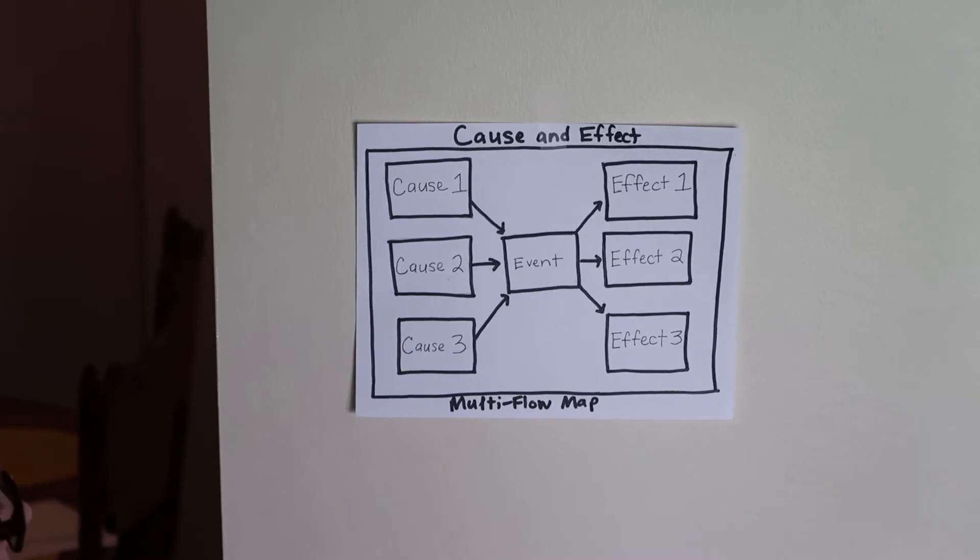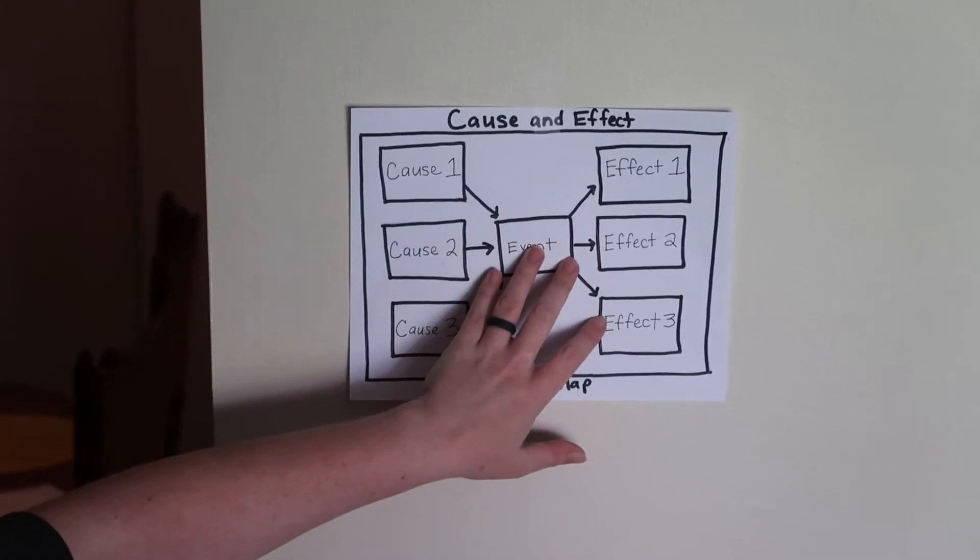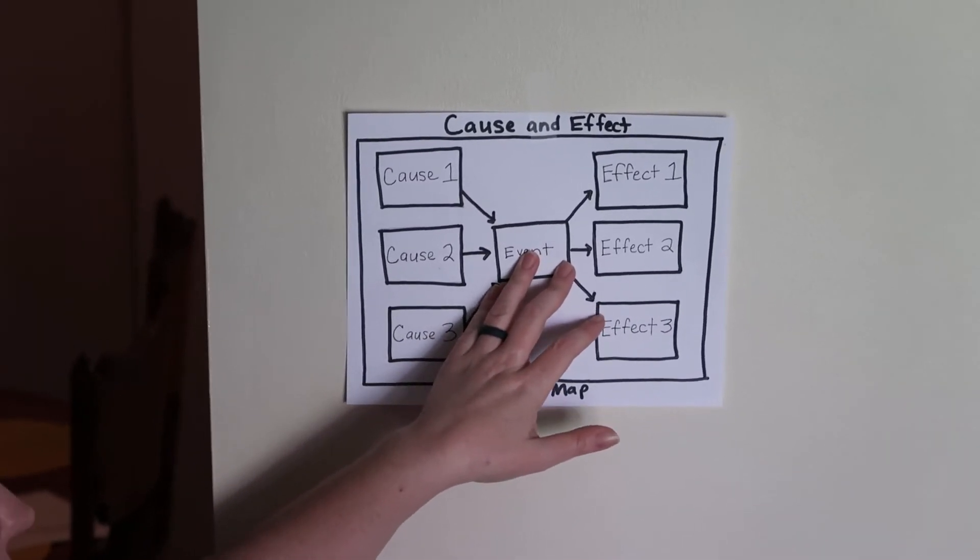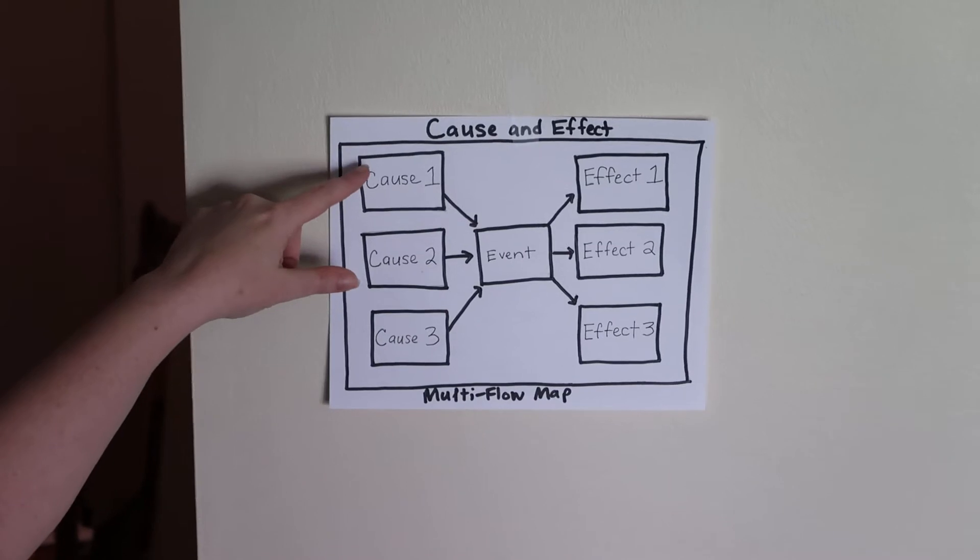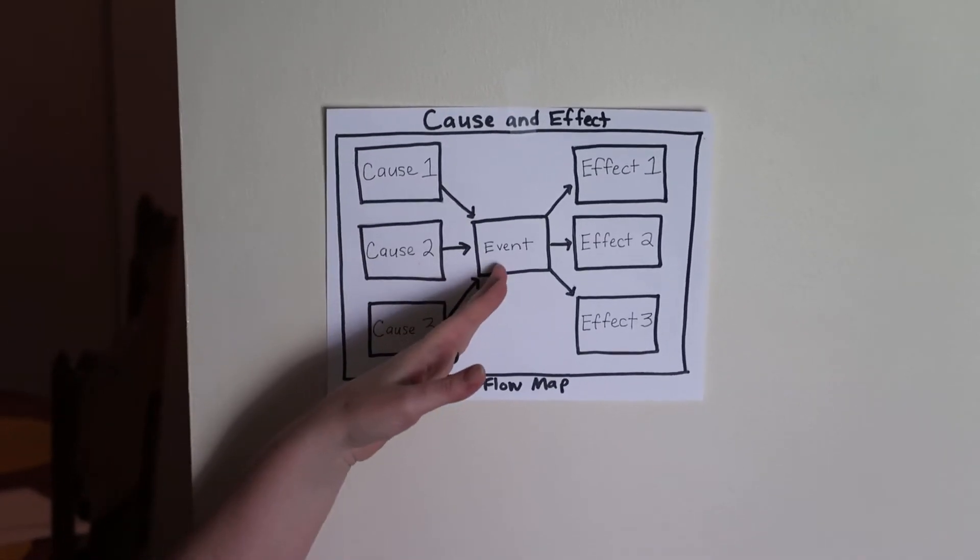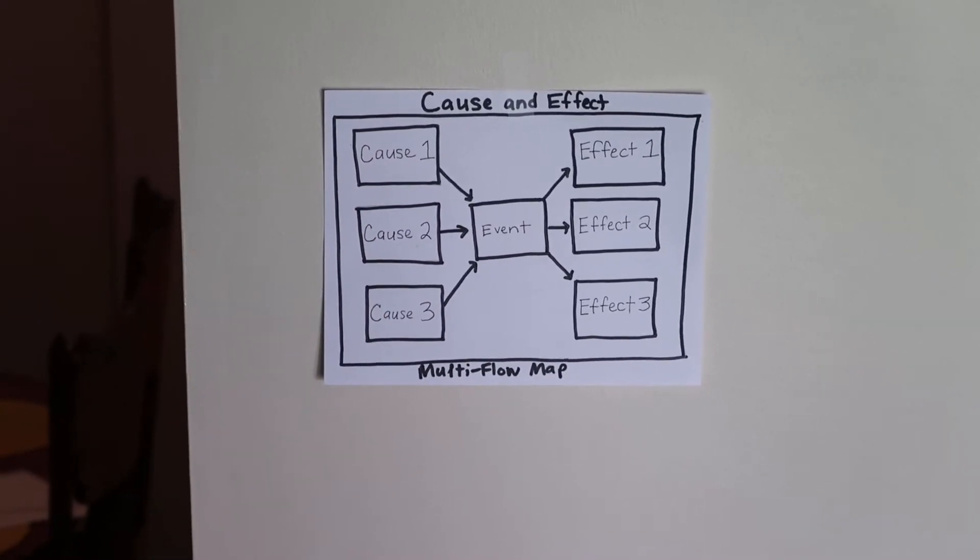So, you just think of your event, whatever that is, maybe like an event from the story or an event from your day, whatever the example is. And then you would list the causes that made this event happen. And then each of those causes would go in a separate box.